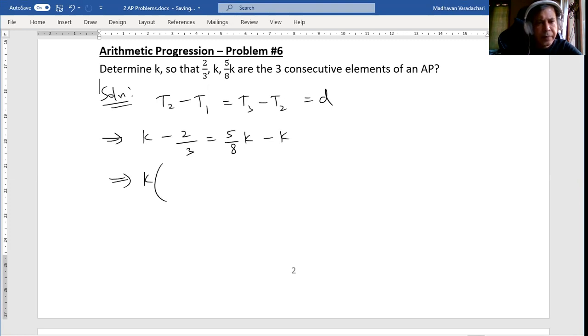Bring all k to one side. Here I can write, if I take this k to the other side it becomes positive k, so I will write k times (1 minus 5/8).